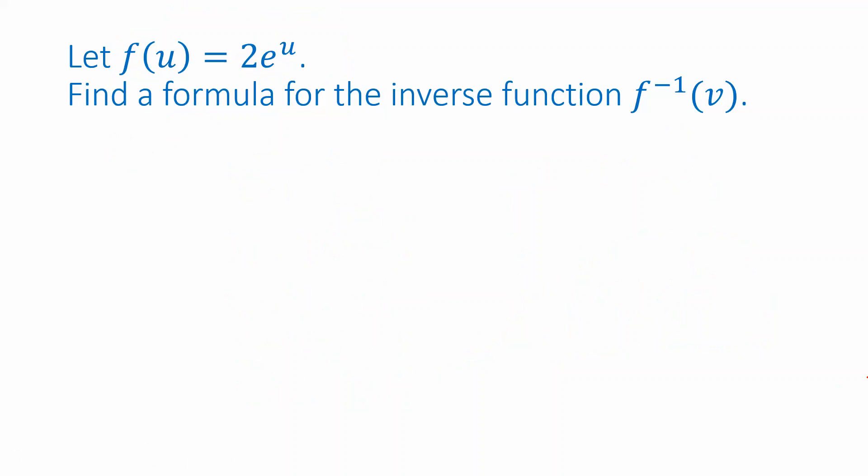Here's another example of calculating the inverse function. So I want to know how to get an output of v in order to calculate f inverse of v. So the first thing I can do is divide both sides by 2. Now in order to isolate the u here I'm going to have to undo the exponentiation e to the u, which means I actually have to use the inverse of the exponentiation function and that's the natural logarithm function.